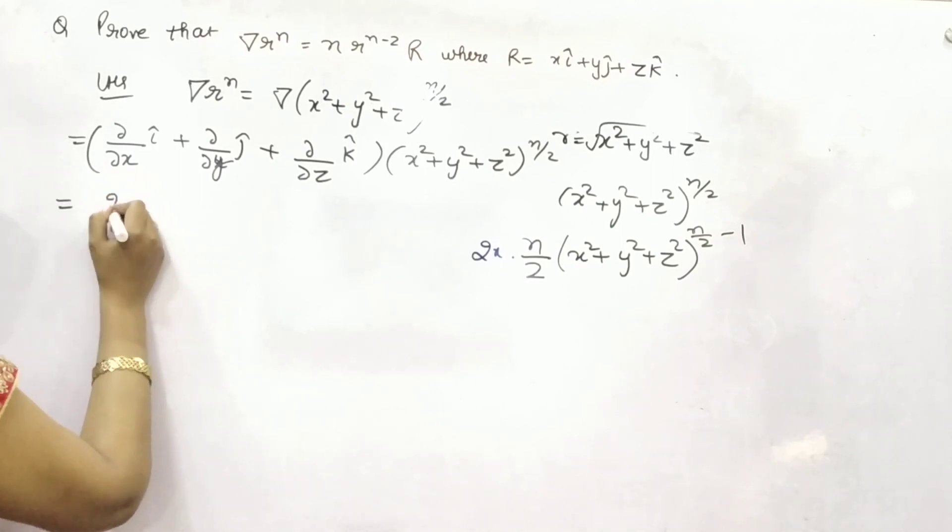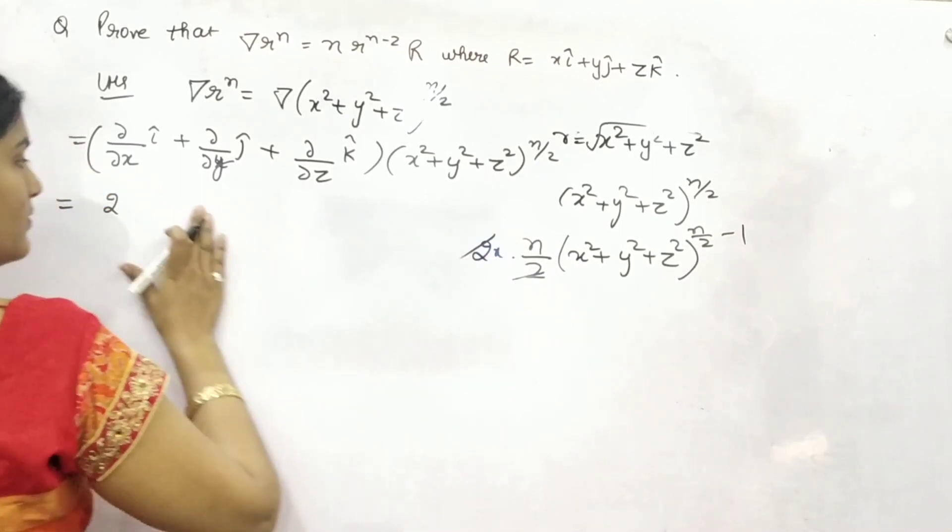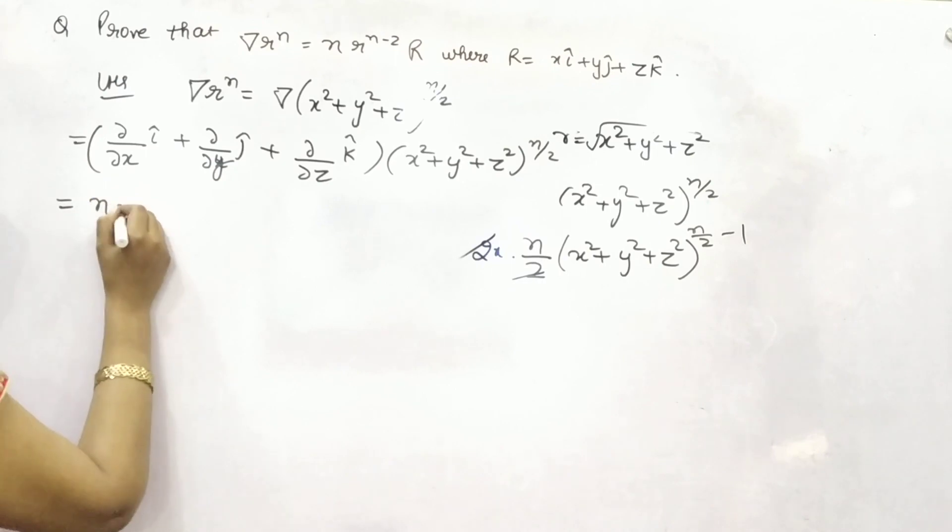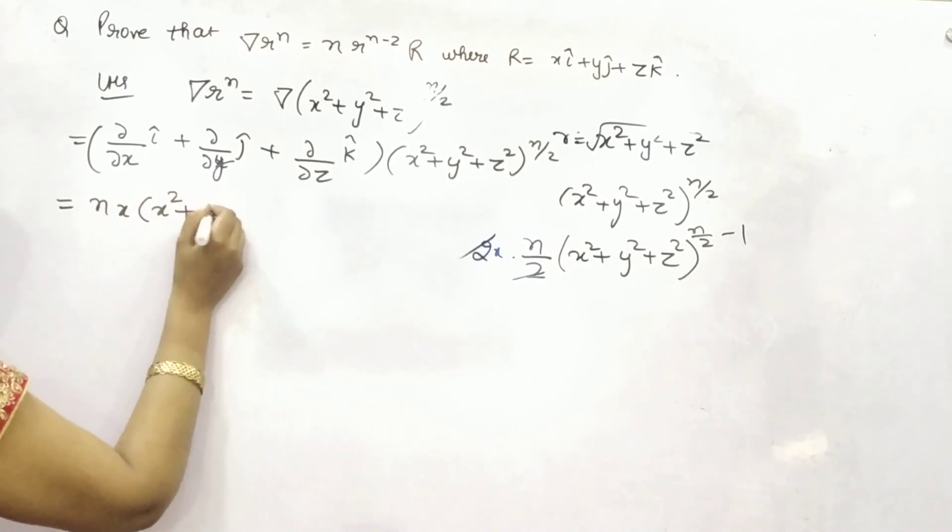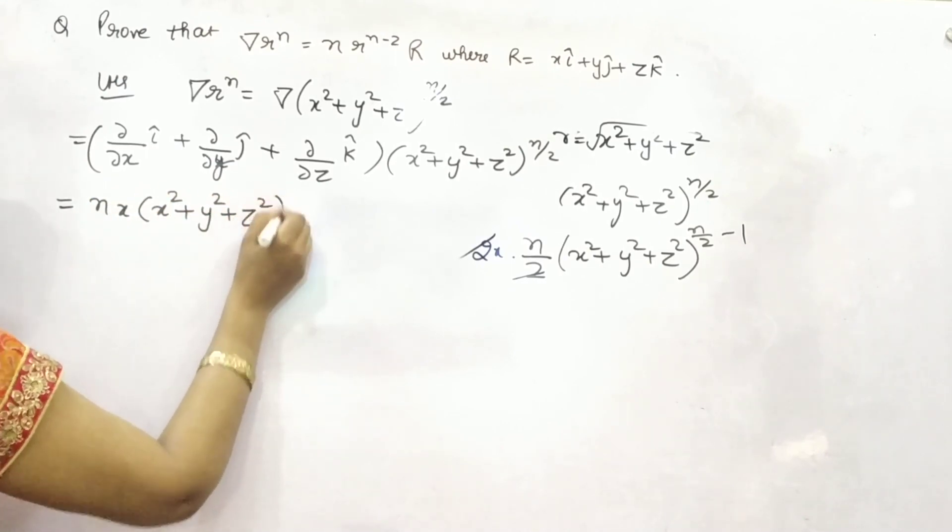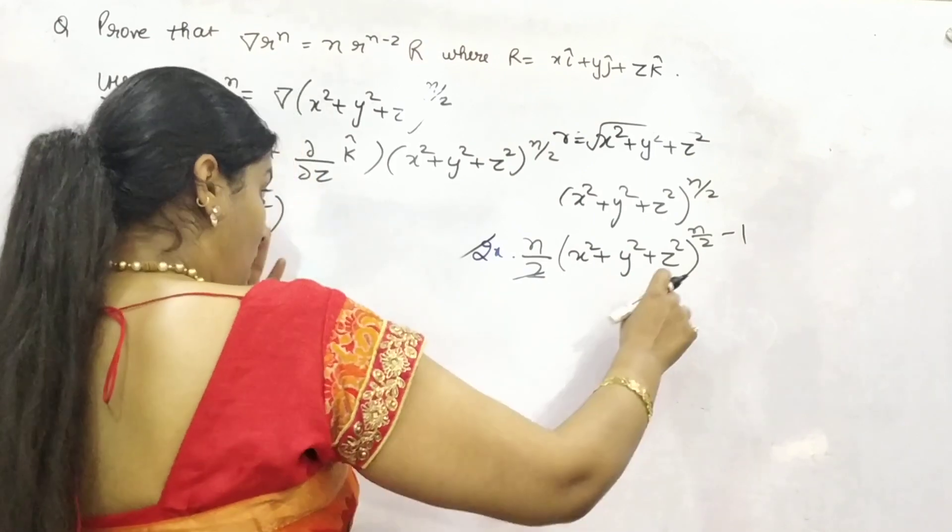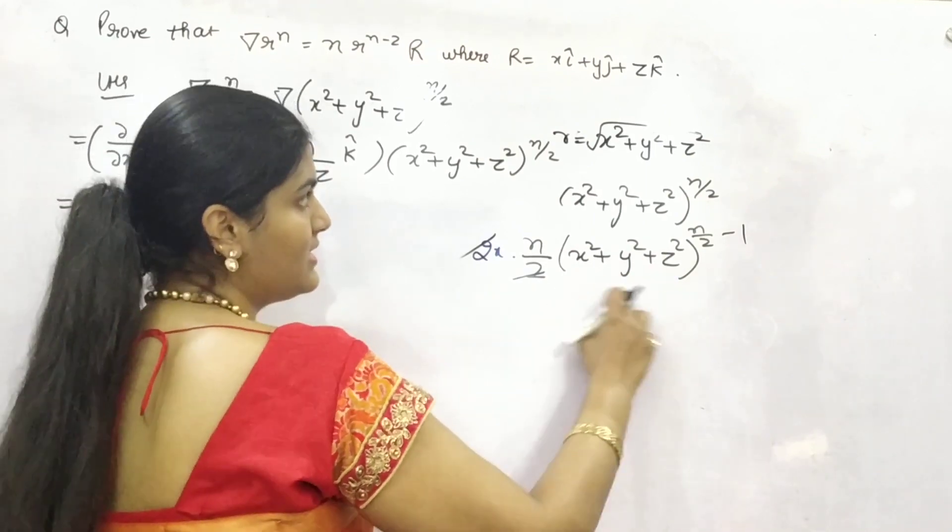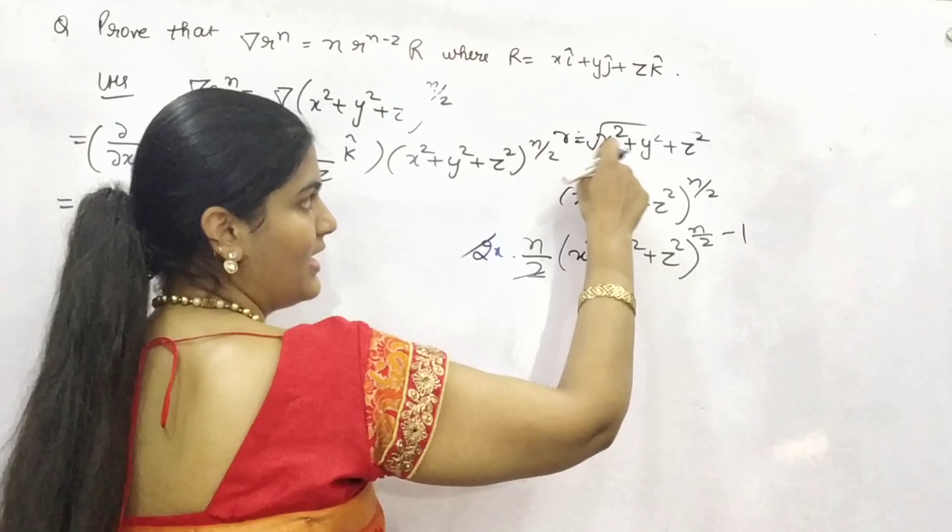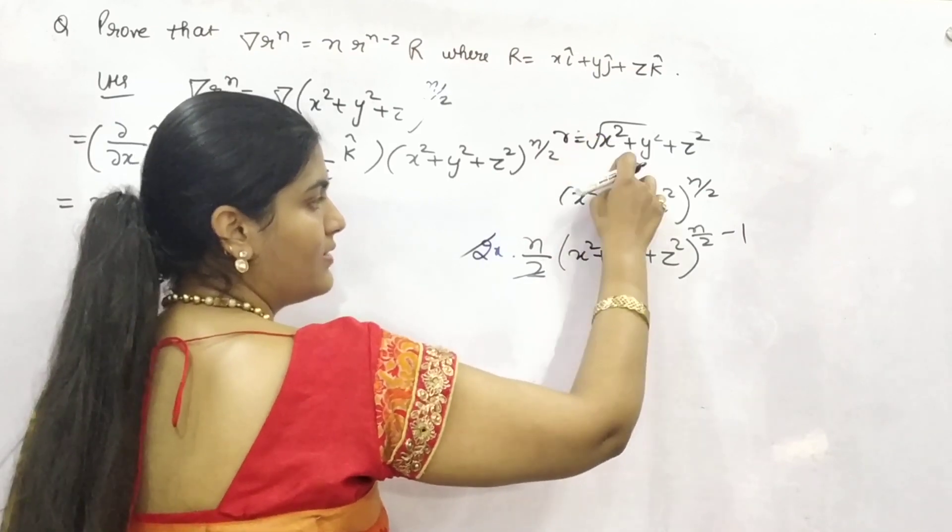Right? So, 2 will be cancelled too. So, it will be Nx, x square plus y square plus z square. Now listen. You can see that this is, this is nothing but R. Right? If you see, this is your R raised to power N. Correct?